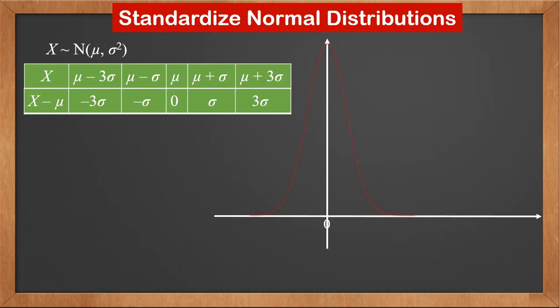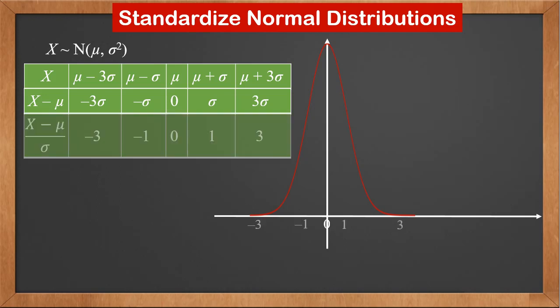Next, we divide by sigma. With this transformation, those 5 values become minus 3, minus 1, 0, 1, and 3. This is exactly the standard normal distribution N(0, 1).